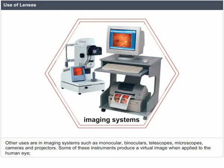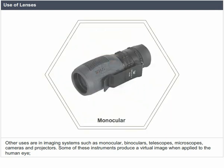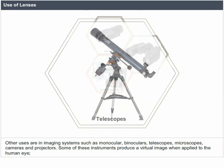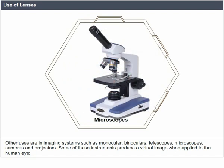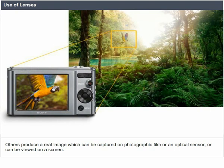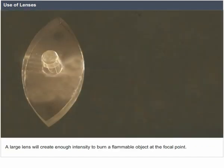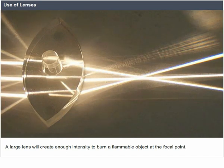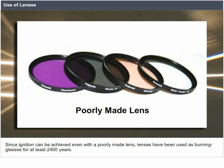Other uses of lenses are in imaging systems such as monoculars, binoculars, telescopes, microscopes, cameras, and projectors. Some of these instruments produce a virtual image when applied to the human eye; others produce a real image which can be captured on photographic film or an optical sensor and viewed on a screen. A large lens will create enough intensity to burn a flammable object at the focal point. Lenses have been used as burning glasses for at least 2,400 years.